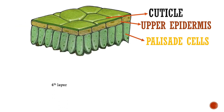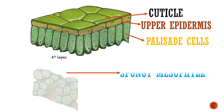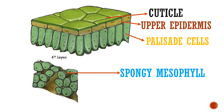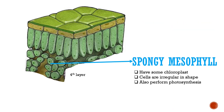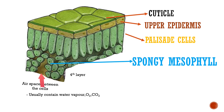The fourth layer is the spongy mesophyll. 'Meso' means middle and 'phyll' means leaf in Greek. Spongy mesophyll has some chloroplasts but not as much as palisade cells. Spongy mesophyll cells are irregular in shape, and also perform photosynthesis but not as much as palisade cells.